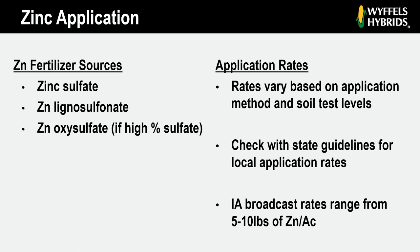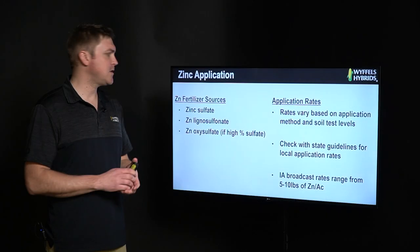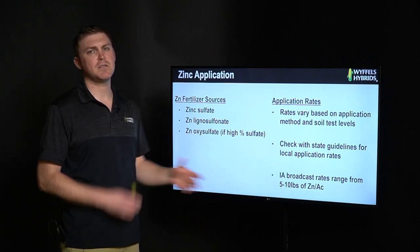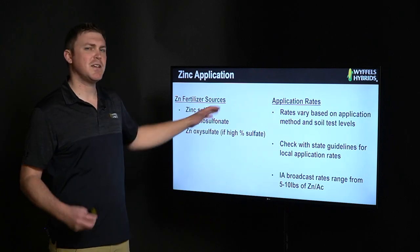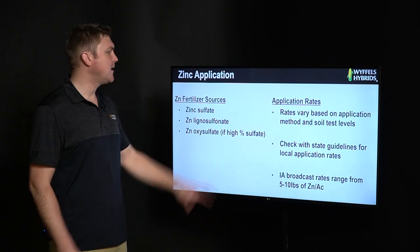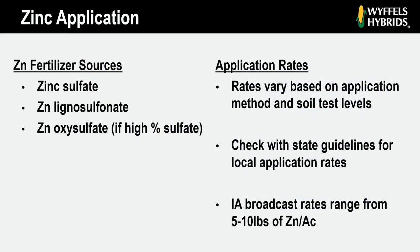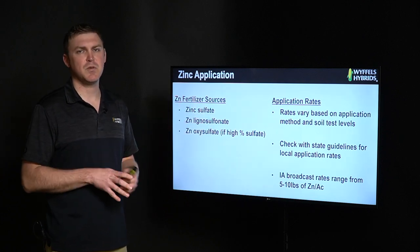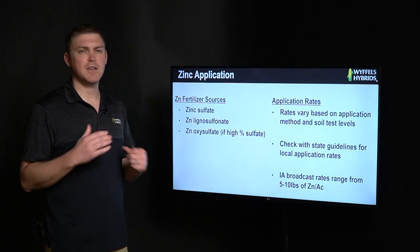When making zinc applications, the first thing we want to do is check that soil test — we don't want to just put extra zinc out there just for the sake of putting it out. There are three good sources of zinc fertilizer, and application rates will absolutely vary based on the soil test you've done previously on that field. Check with your local state guidelines — just as an example, in Iowa for a broadcast application of zinc, we're talking very small amounts: five to ten pounds of actual zinc per acre. If you're using a product like zinc sulfate, that's only about 30 pounds of actual product applied on that field. Definitely something you don't want to over-apply. Check your soil test before making those zinc applications. Thank you so much for spending some time with us today talking about sulfur and zinc. We hope you took something from this presentation — as always, reach out with any additional questions to any of us at Wiffles. Thank you so much.